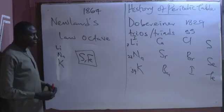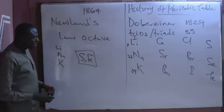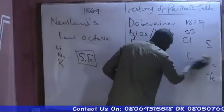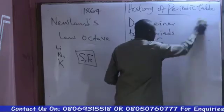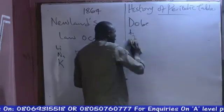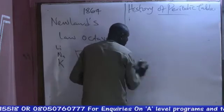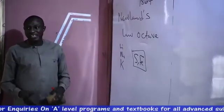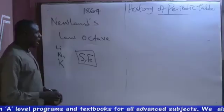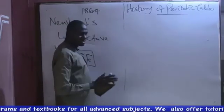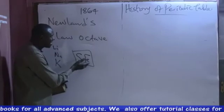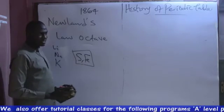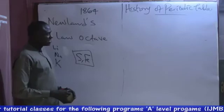Then, after Newlands comes the father of the periodic table — the man referred to as Mendeleev. Mendeleev is called the father of the periodic table because his periodic table led to the modern periodic table that is in use up to date. Mendeleev also arranged elements based on their atomic weight. But apart from accommodating all the elements, he also separated the two dissimilar elements that were placed together in Newlands' periodic table. Mendeleev also left gaps for undiscovered elements and predicted their properties.